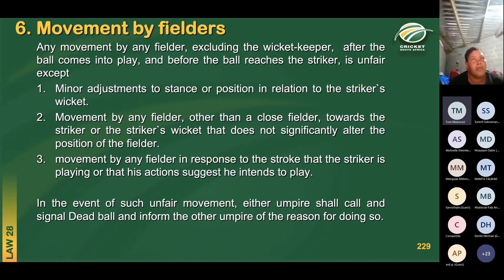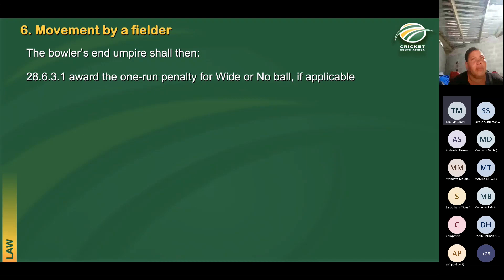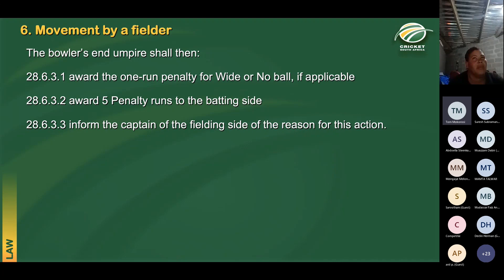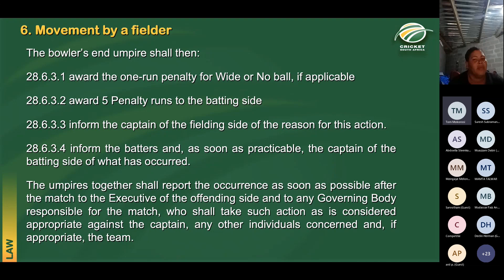What happens if there is illegal movement by a fielder? Either umpire shall call and signal dead ball and inform the other umpire. If there is a wide or no ball, that one-run penalty will always stand. Similar to the wicket keeper's punishment for illegal movement, there are five penalty runs awarded to the batting side for illegal movement by a fielder — also a new law, no warning, straight to punishment. We obviously need to inform and report the incident. It is now regarded as a serious offence, hence the five-run penalty without warning and reporting after the day's play.